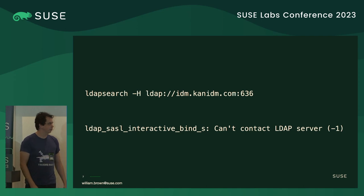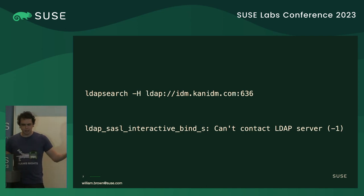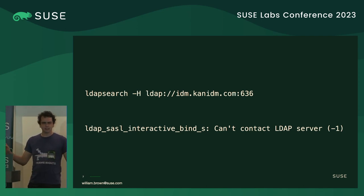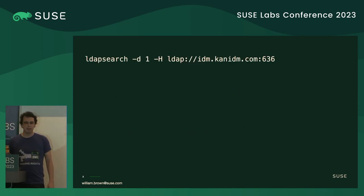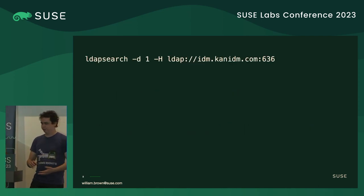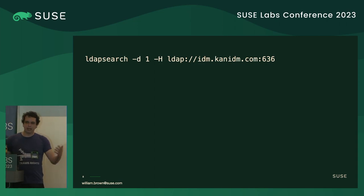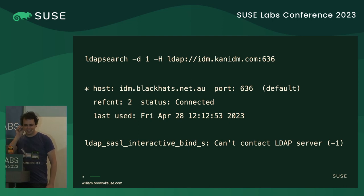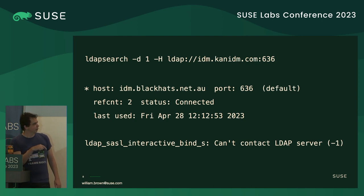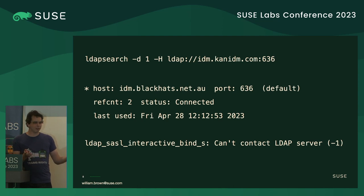I know that's the URL — I ping it and it works — but it doesn't connect. So I type in -d1 for increased debugging and get another 300 lines of error. But I get this thing that says "status: connected," but also "can't contact it." Which one's true? Is it there or is it not?